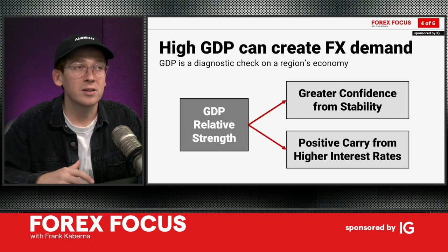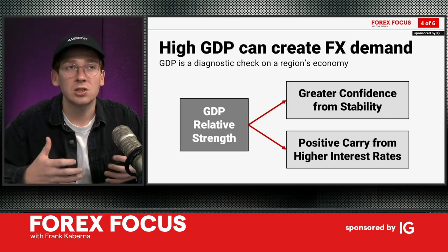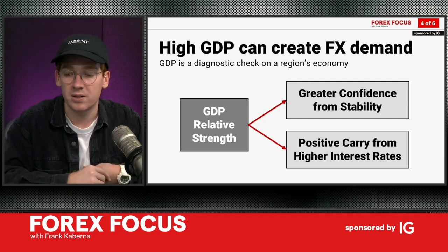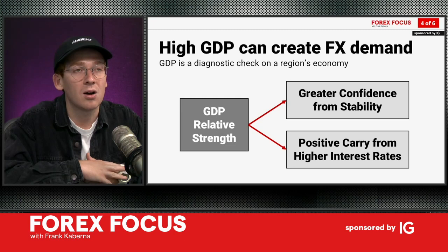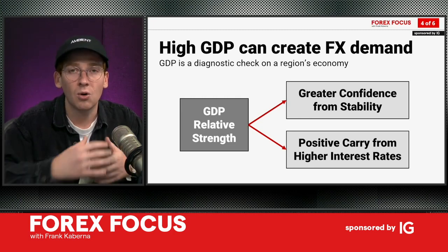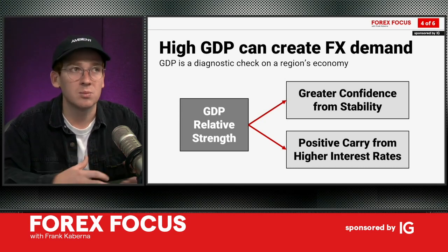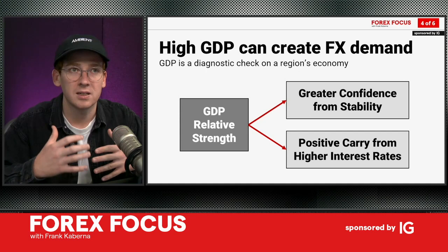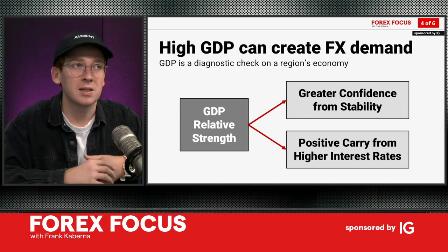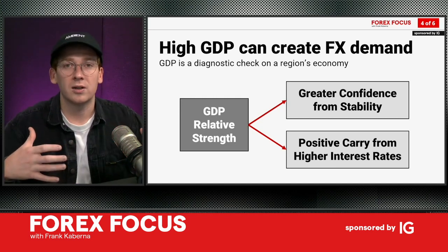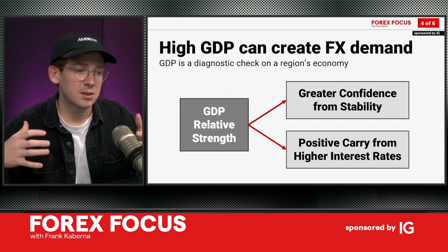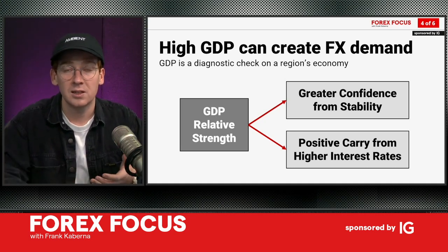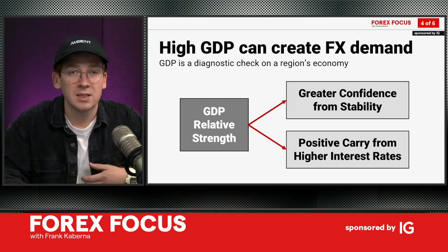This also has knock-on effects that can create US dollar demand. If you're seeing high relative strength in GDP, you have the initial bit of greater confidence from the stability of that region, and thus a flight to quality in their bonds and their currency. But then also a potential for higher positive carry to hold that currency long if their interest rates are moved higher with that higher GDP. Of course, with that carry trade there are fees and risks associated. But theoretically: higher GDP, stronger economy, higher interest rates, and thus positive carry to hold that currency long relative to short, say, the yen, where interest rates are still near 0%.